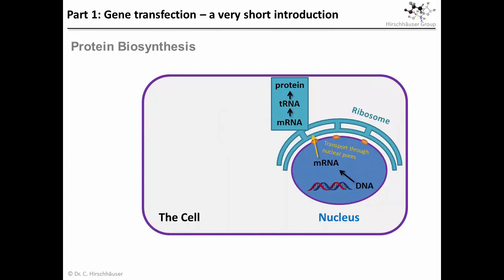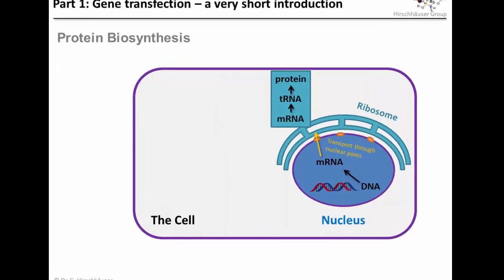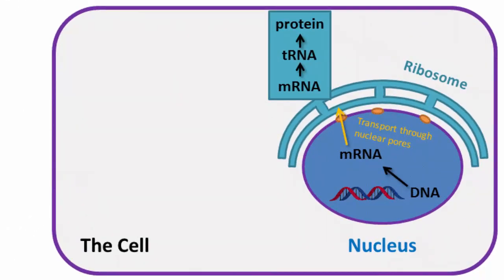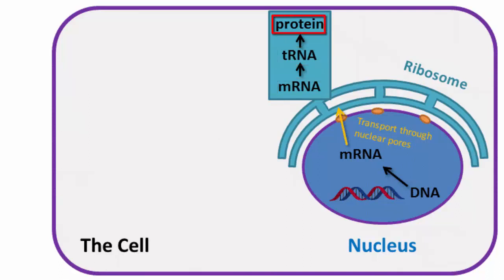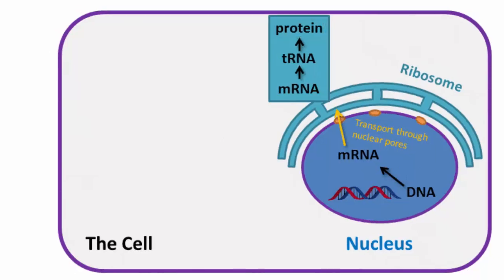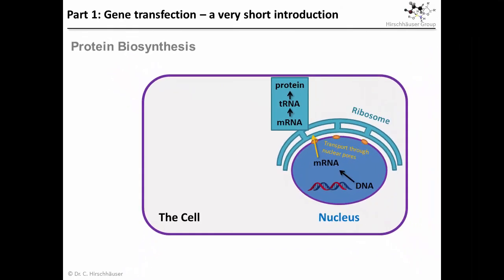Let's start with a quick recap of protein synthesis. Cells store information about proteins and RNAs in DNA molecules, which are located in the nucleus. In order to produce a protein, a copy of the genetic information is transcribed onto messenger RNA, which is then transported outside the nucleus. There at the ribosome, this information is used as a template for the production of proteins — it's a bit like transporting blueprints from headquarters to the factory.